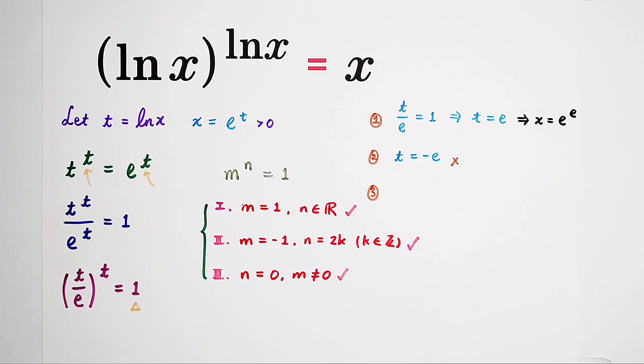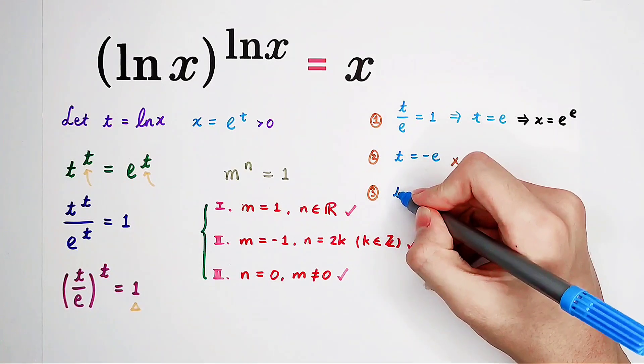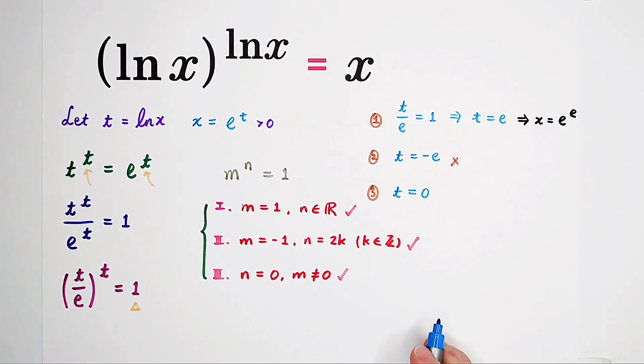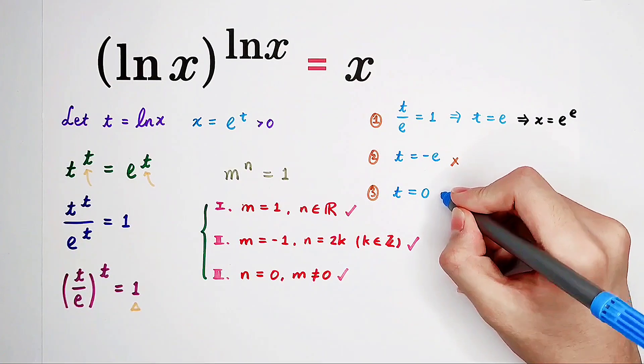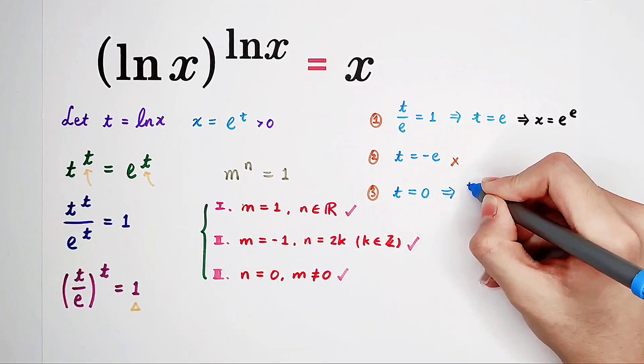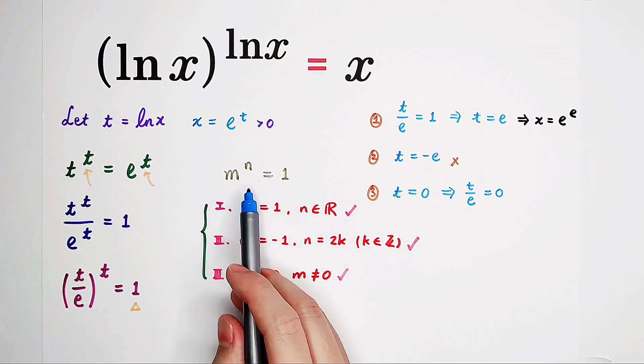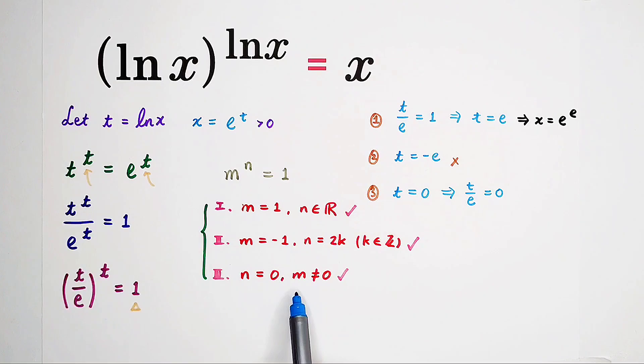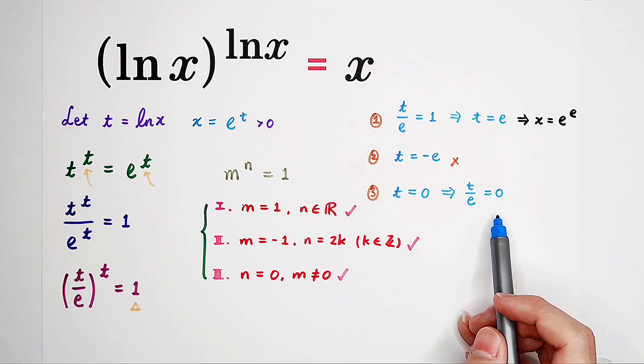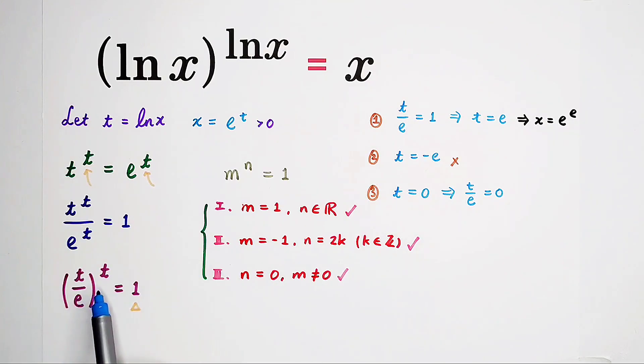Our third case is when t equals 0. The exponent is 0. If t equals 0, then we can get that t over e is also 0. However, when n equals 0, m cannot be equal to 0. Then, this equation will have solution. However, here, both the base and exponent are 0. So, no solution.